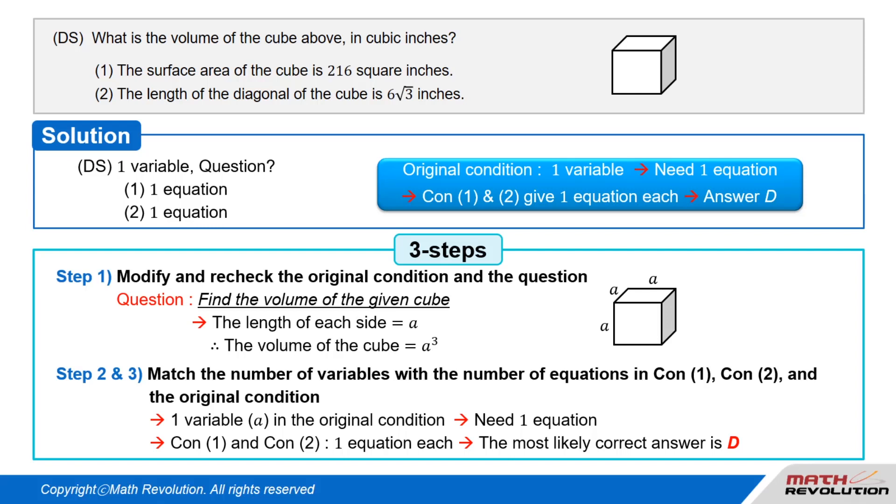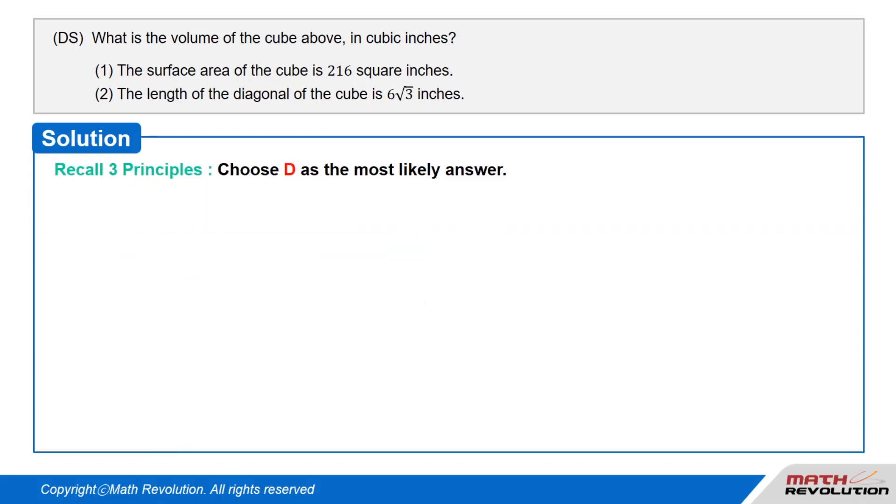You should never use the conventional approach suggested by the official guide. It is way too inefficient. Recall three principles and choose D as the most likely answer.